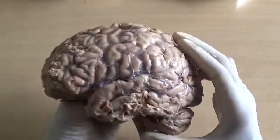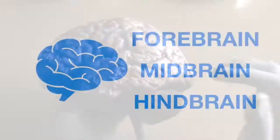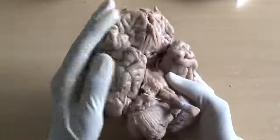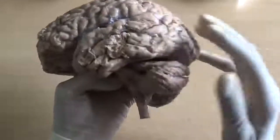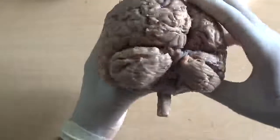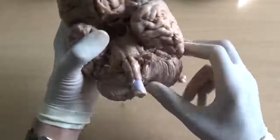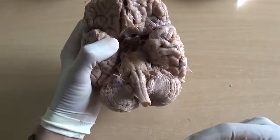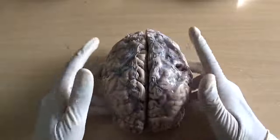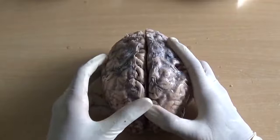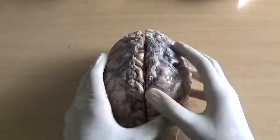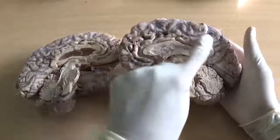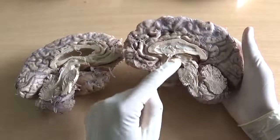Now let's overview the parts of the brain. Developmentally, it is divided into forebrain, midbrain, and hindbrain — or prosencephalon, mesencephalon, and rhombencephalon. Overall, we have the cerebrum, postero-inferiorly the cerebellum, and here is the brain stem made up of midbrain, pons, and medulla — this medulla being continuous with the spinal cord. Each cerebrum is made up of two cerebral hemispheres connected in the midline by the corpus callosum. If we cut it open and see it from the side, we can clearly make out the cerebrum, cerebellum, and brain stem.